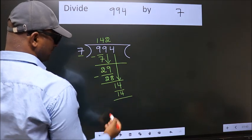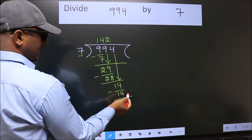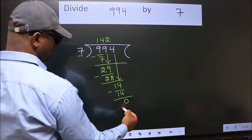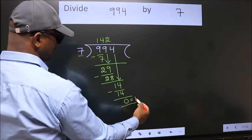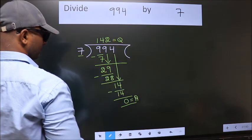Now we subtract, we get 0. No more numbers to bring it down. So we stop here. This is our remainder. This is our quotient. 142.